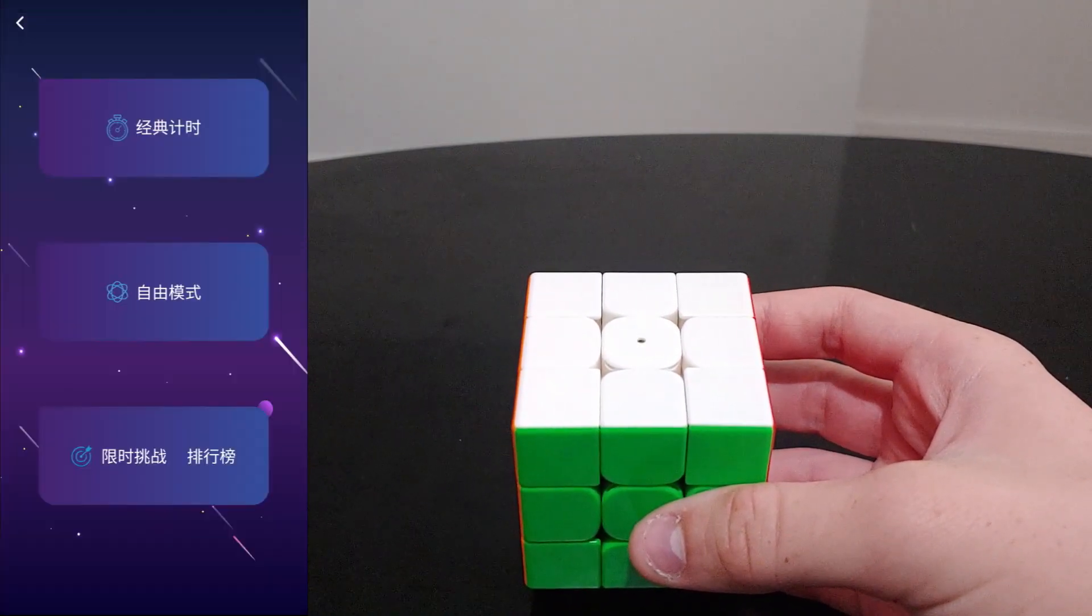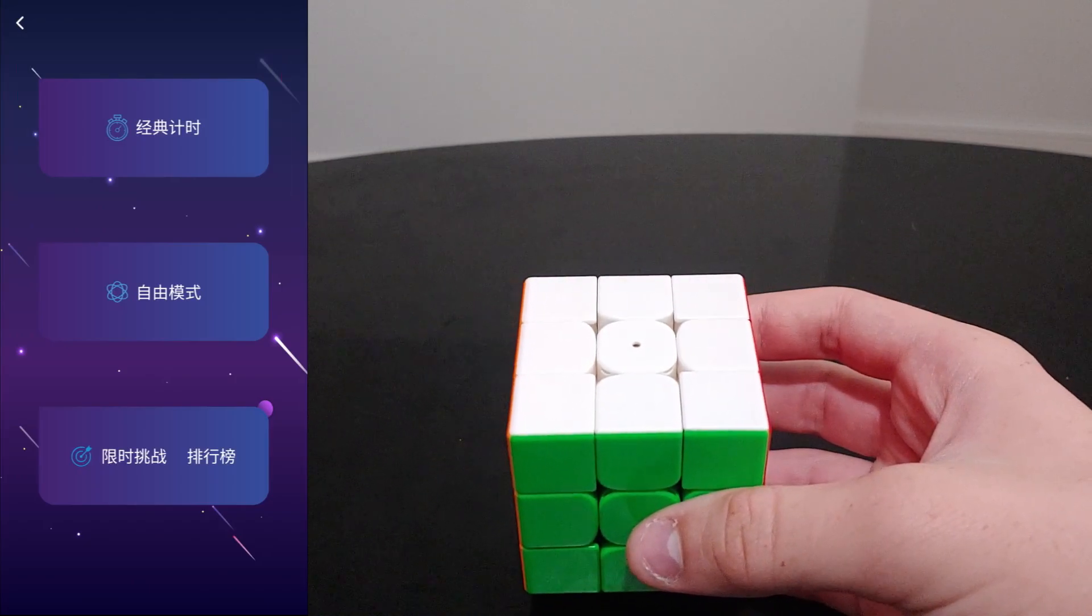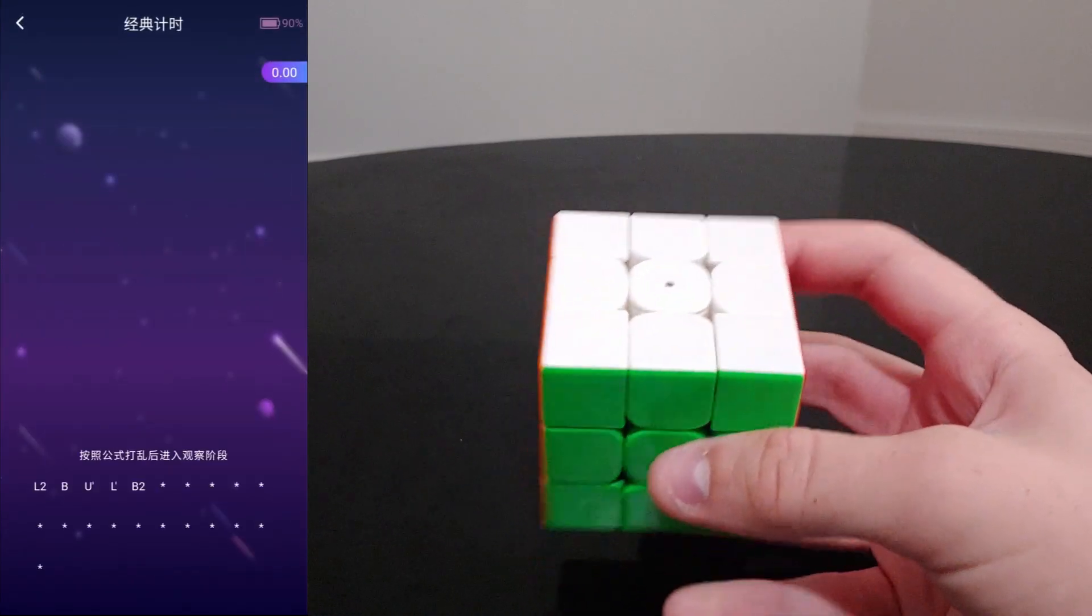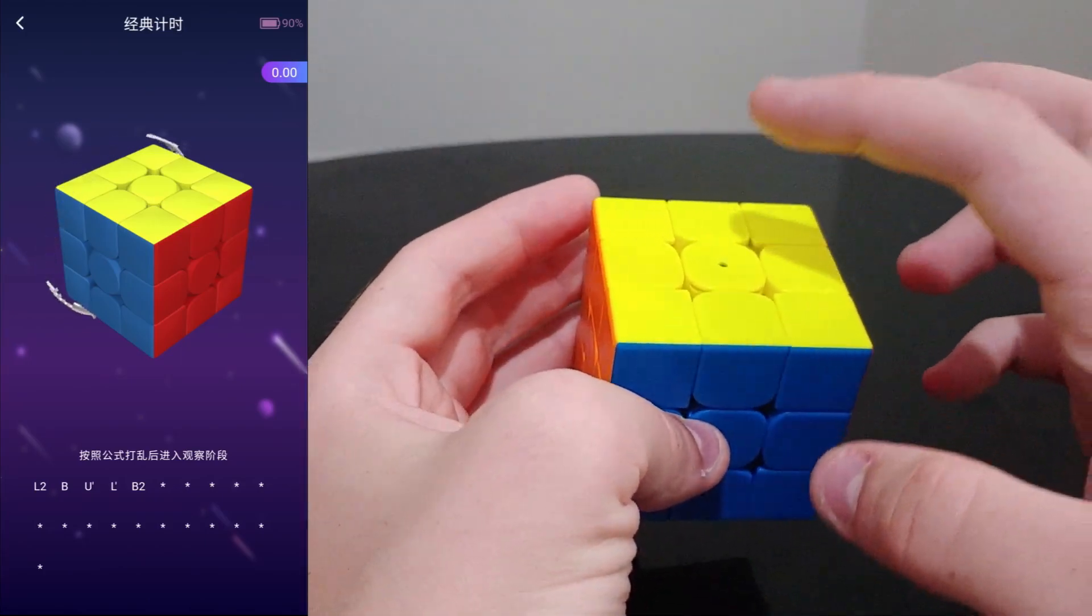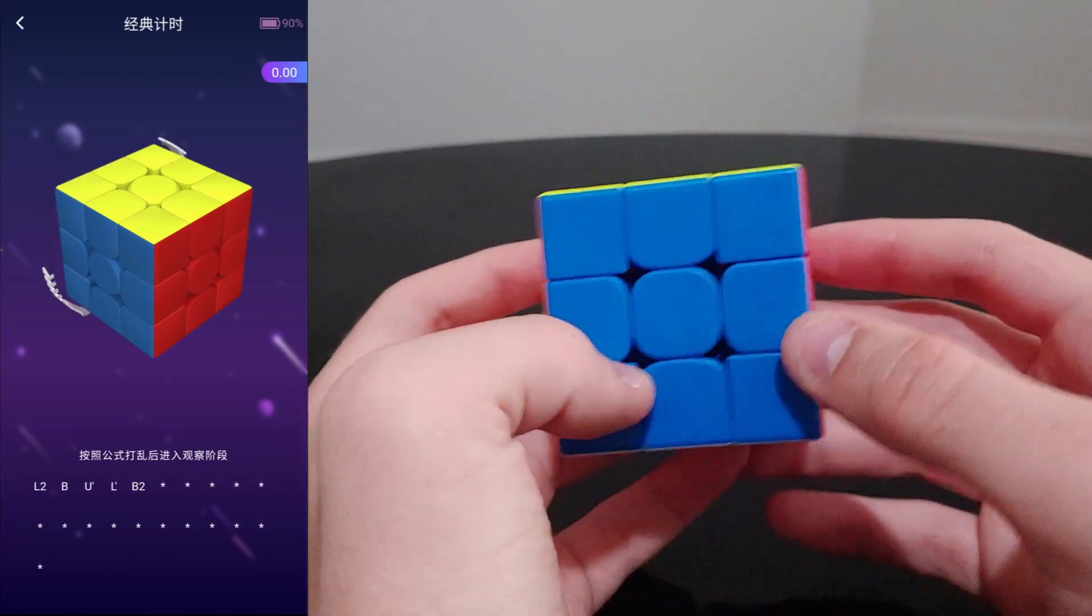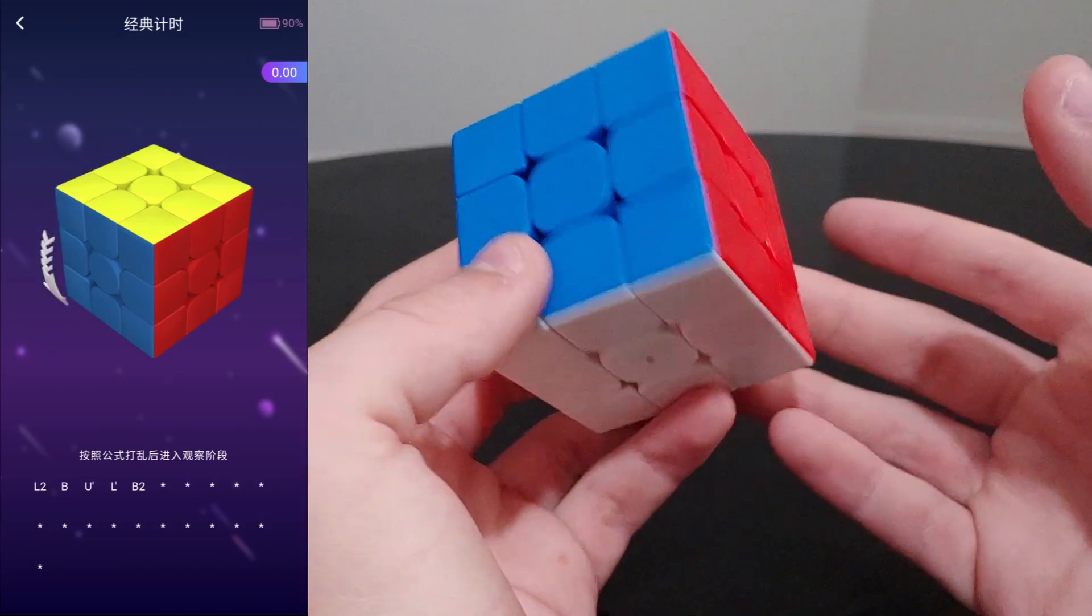Now you can push the back button, and then the timer again, and start solving. Unfortunately, you currently have to have yellow on top and blue in front to scramble, but I'm hoping that that will eventually be changed.